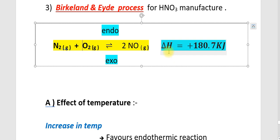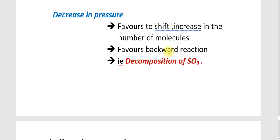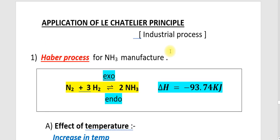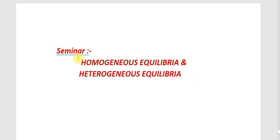These are all examples that can be explained on the basis of Le Chatelier's principle in industrial processes. We are now concluding our module on chemical equilibrium. For the seminar, you are given the topics of homogeneous equilibria and heterogeneous equilibria — please prepare clear concepts related to these topics and submit.